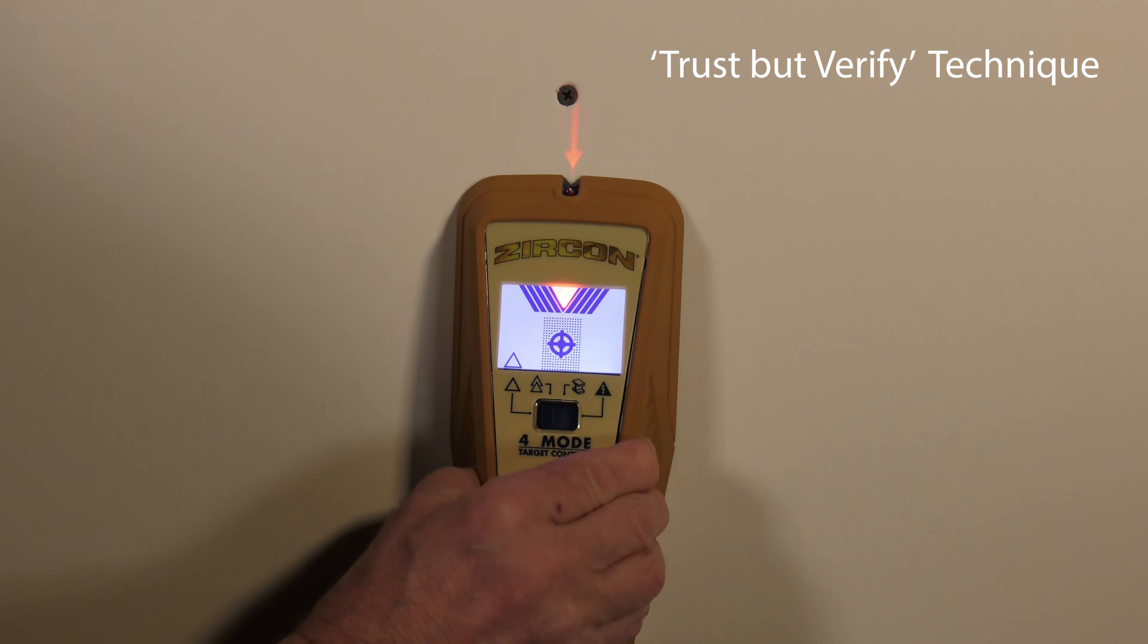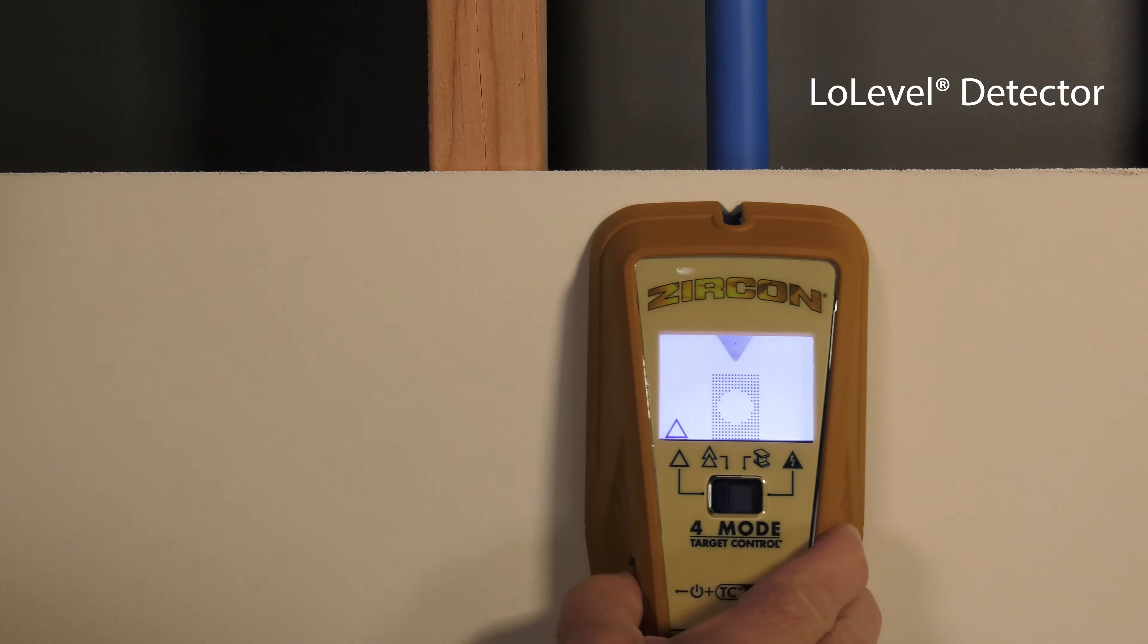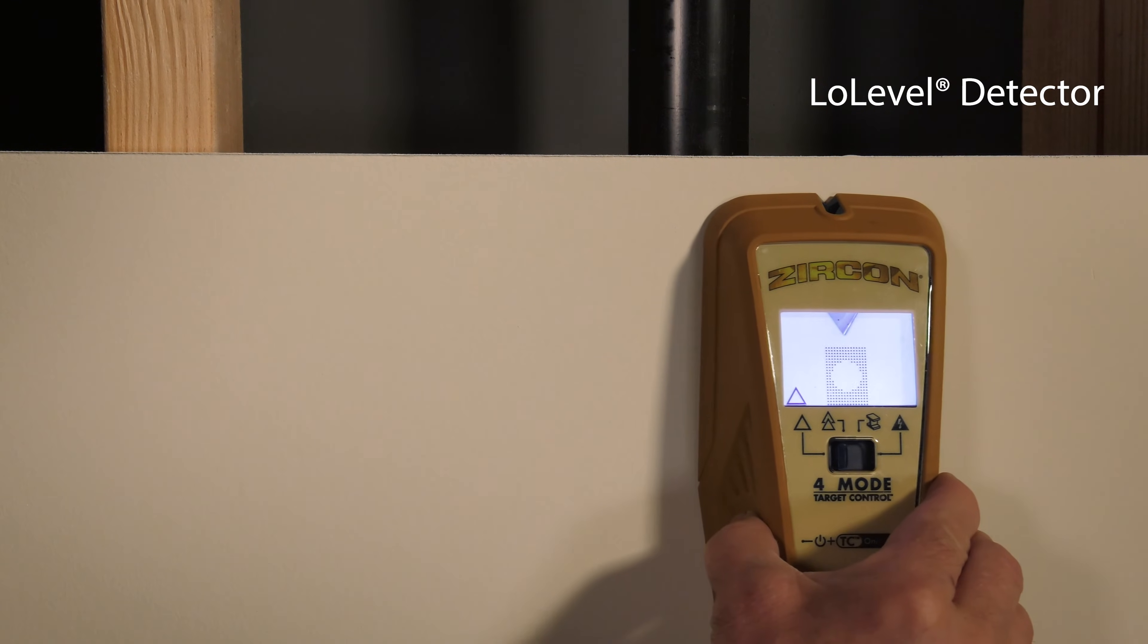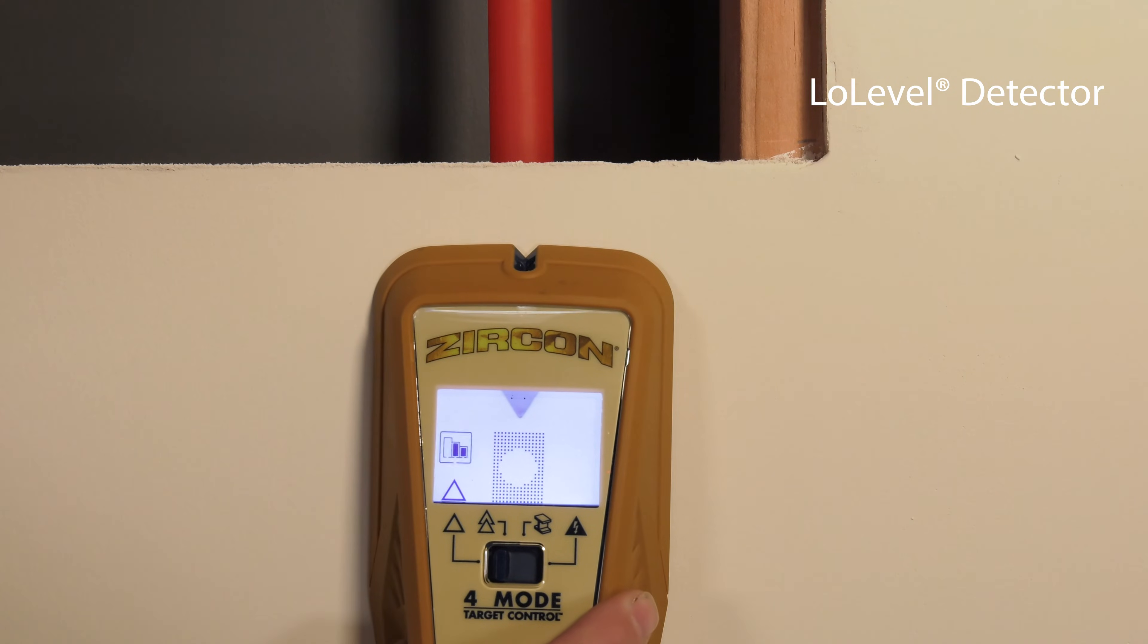When scanning over low or weak signal objects such as plastic water pipes, plastic sewer drains, or studs deeper than three-quarters of an inch in TC mode, the low level indicator may appear.